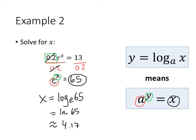So depending on what kind of answer you're looking for, if you're looking for an exact answer, the exact answer is natural log of 65. An approximate answer would be 4.17.